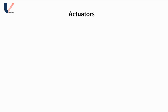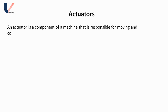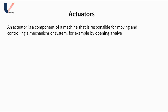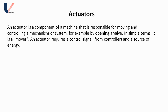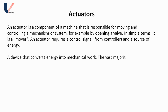An actuator is a component of a machine that is responsible for moving and controlling a mechanism or system — for example, by opening a valve. In simple terms, an actuator is a mover. An actuator requires a control signal from the controller and a source of energy. A device that converts energy into mechanical work is known as an actuator. The vast majority of actuators produce either rotational motion or linear motion.